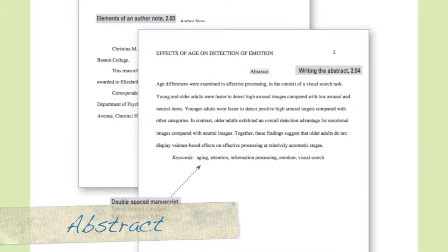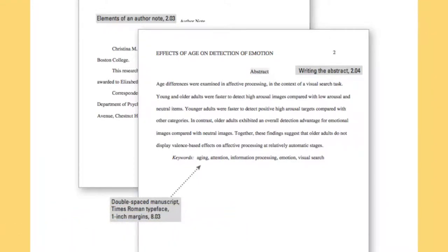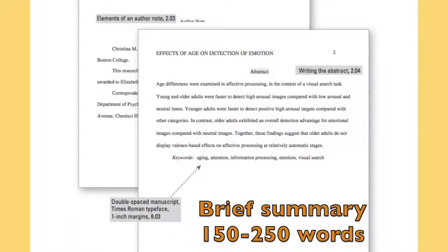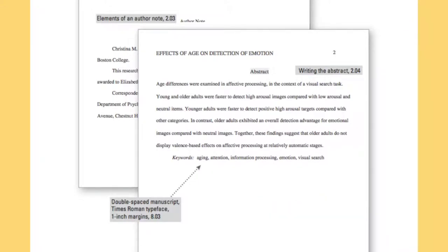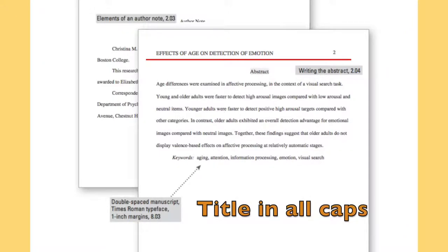When required, the second page is going to be your abstract, which is a brief summary of your paper, and it's going to be between 150 and 250 words. An important note for the second page of your research paper is that the title in the header no longer contains running head, and now it is just the all caps title.